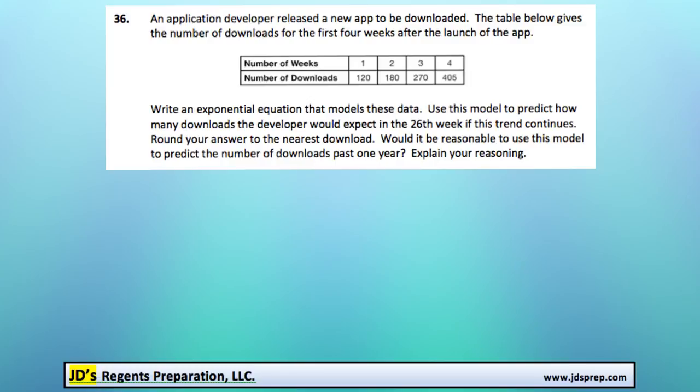So you'll want to go into stat, edit, and then you'll write down your L1 and L2 values from the table: 120, 180, 270, and 405.